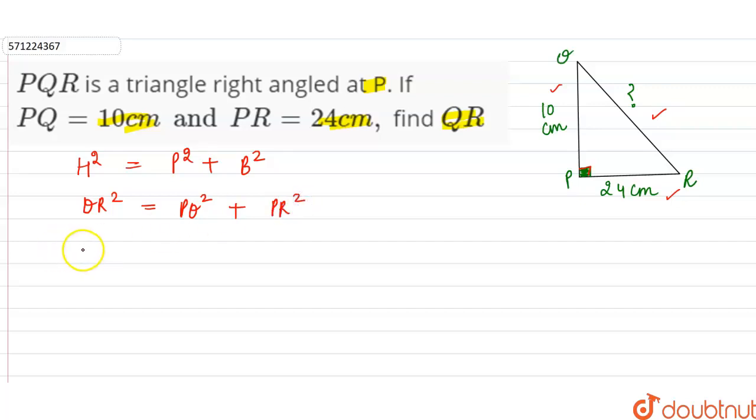The value of PQ is 10, so 10 square, and the value of PR is 24, so 24 square. Now 10 square is 100 and 24 square is 576. So QR square equals 100 plus 576.